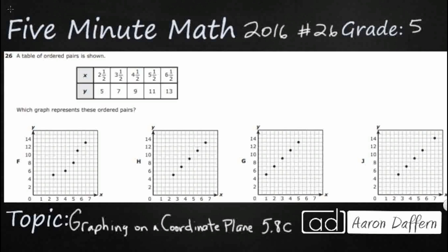So we have a table of ordered pairs. We've got 5 x's, we've got 5 y's, and we simply need to find it on one of these four graphs. But as you can see, our x's are going to be pretty tricky because they are all mixed numbers. So they've got 2½, 3½, 4½, 5½, and 6½. So that looks pretty regular.